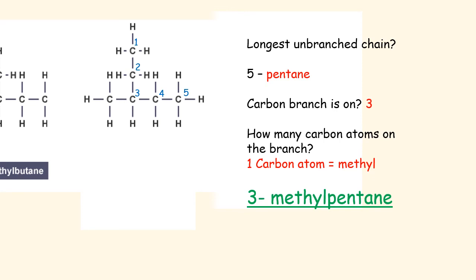That has been our introduction to fuels and to alkanes. Remember the naming systems for alkanes, remember that the general formula is CₙH₂ₙ₊₂, and that the trend we see is that as the number of carbon atoms increases, the melting and boiling points for alkanes also increase. That has been our first lesson for Unit 2.